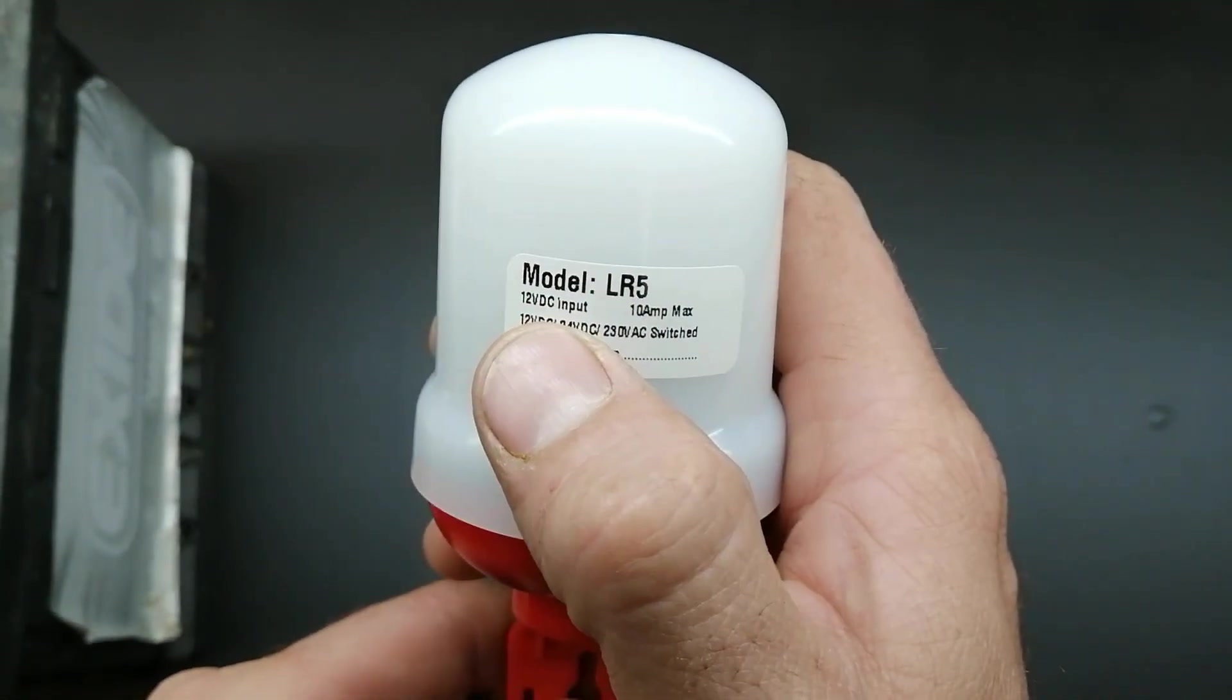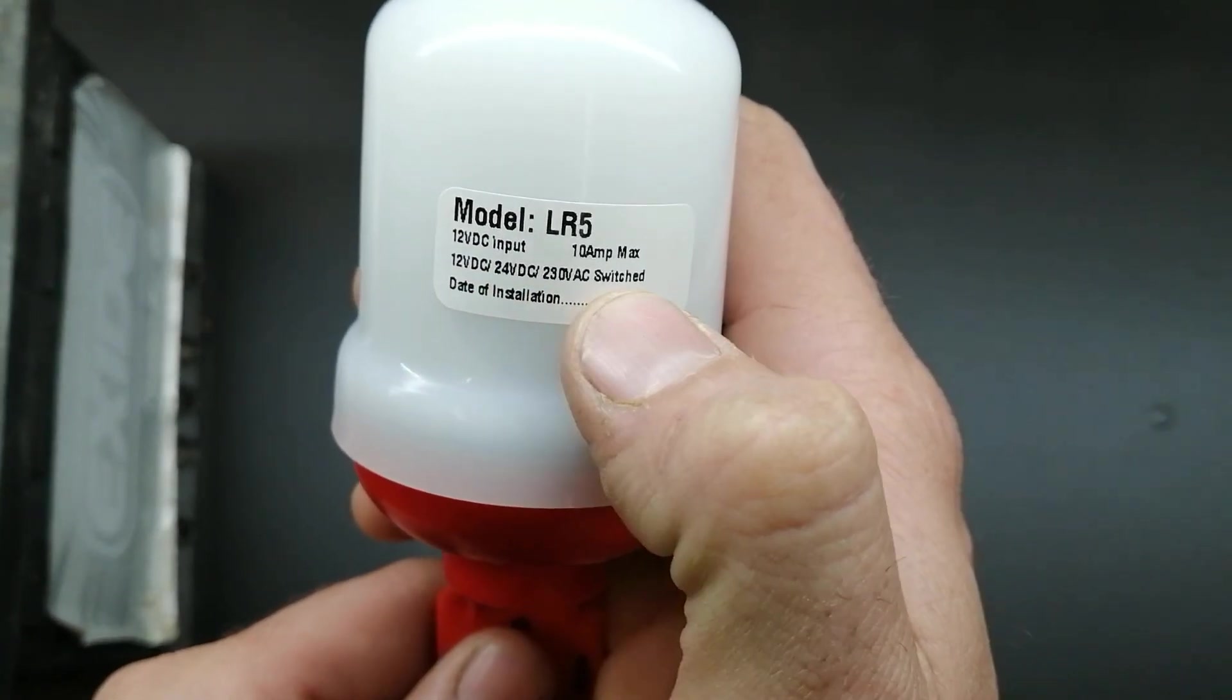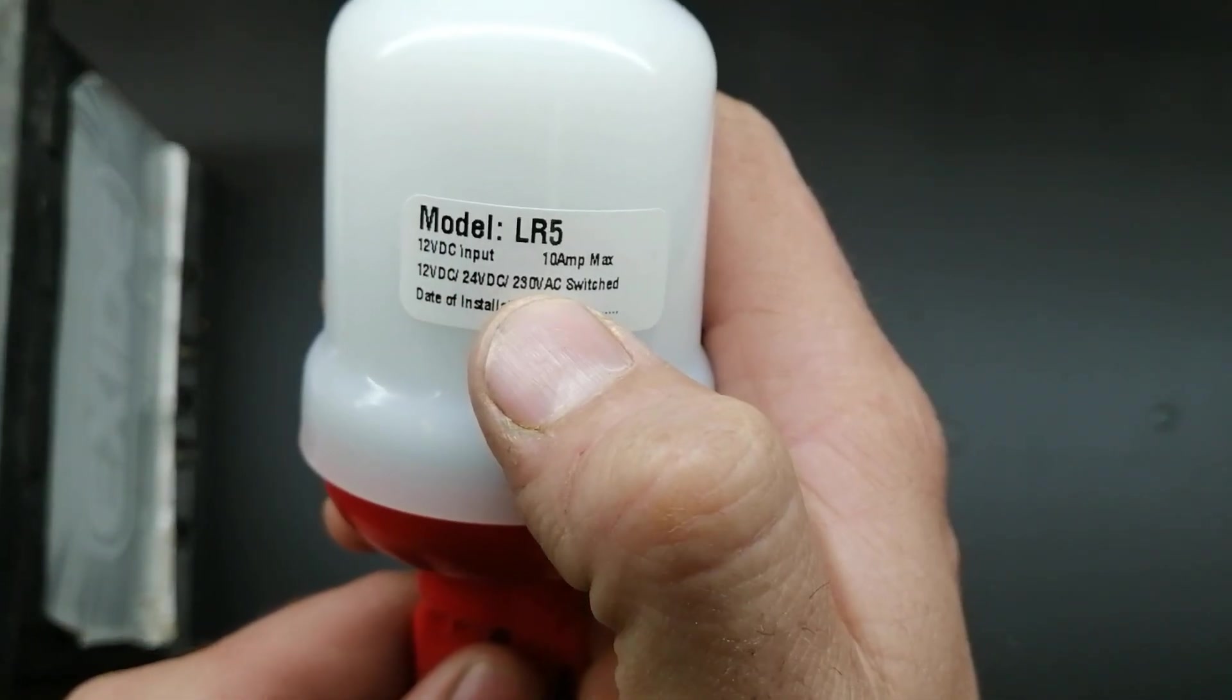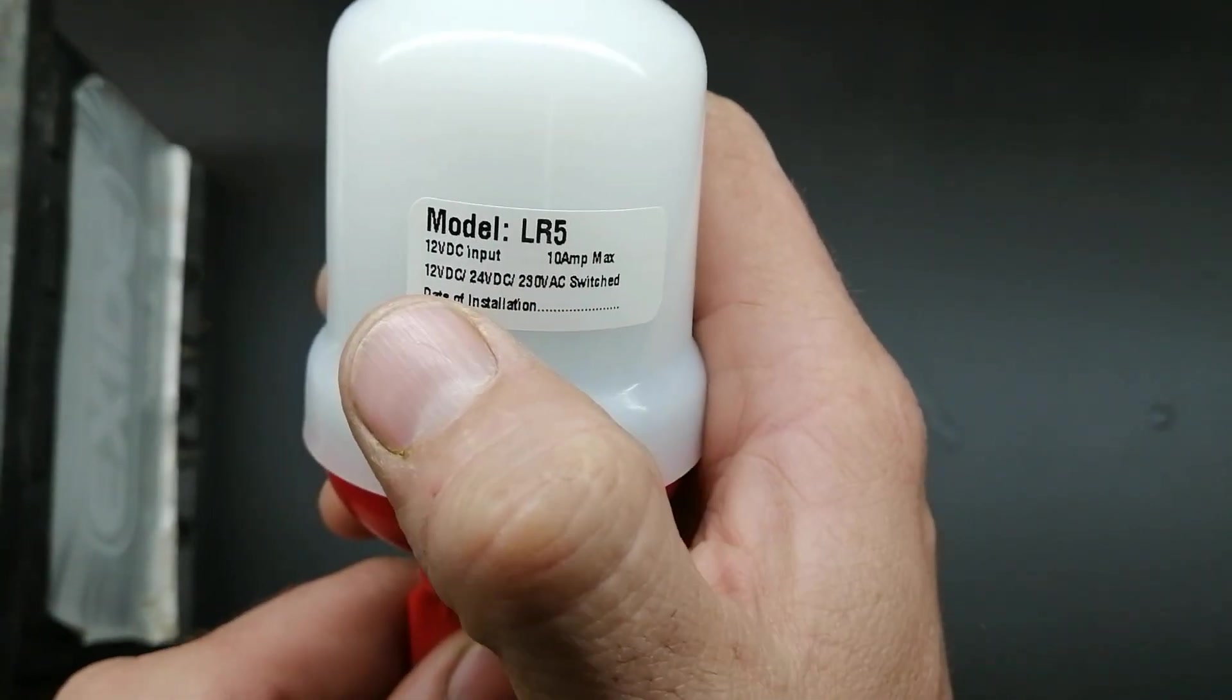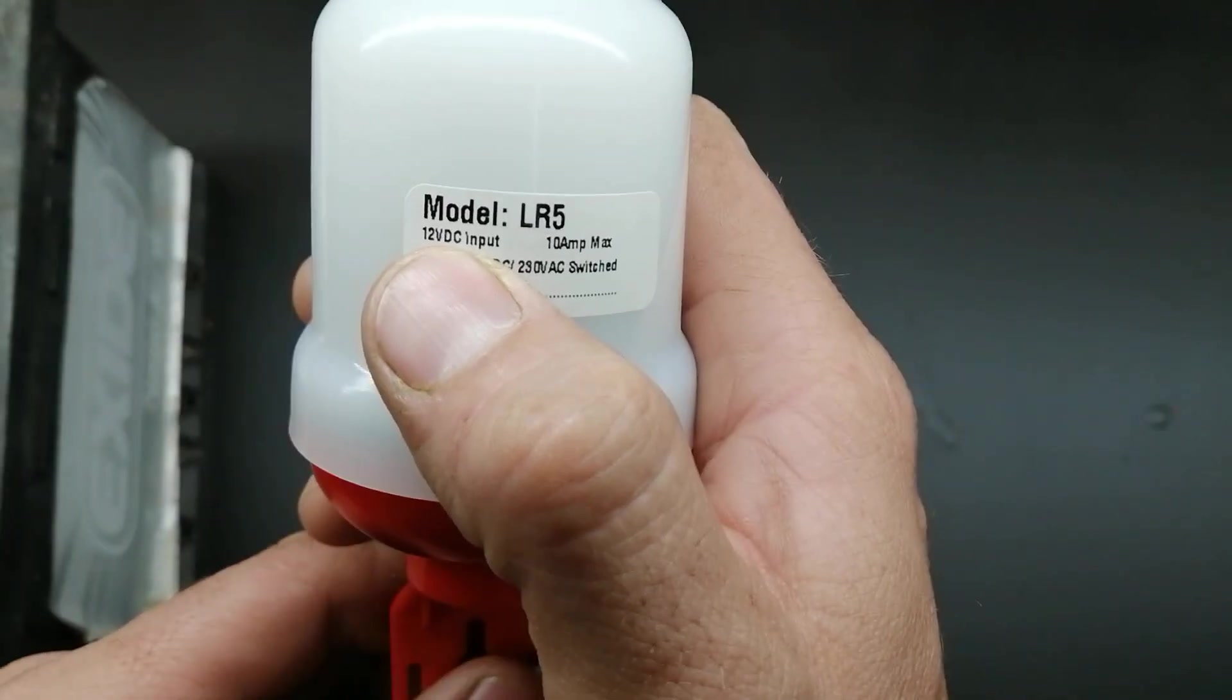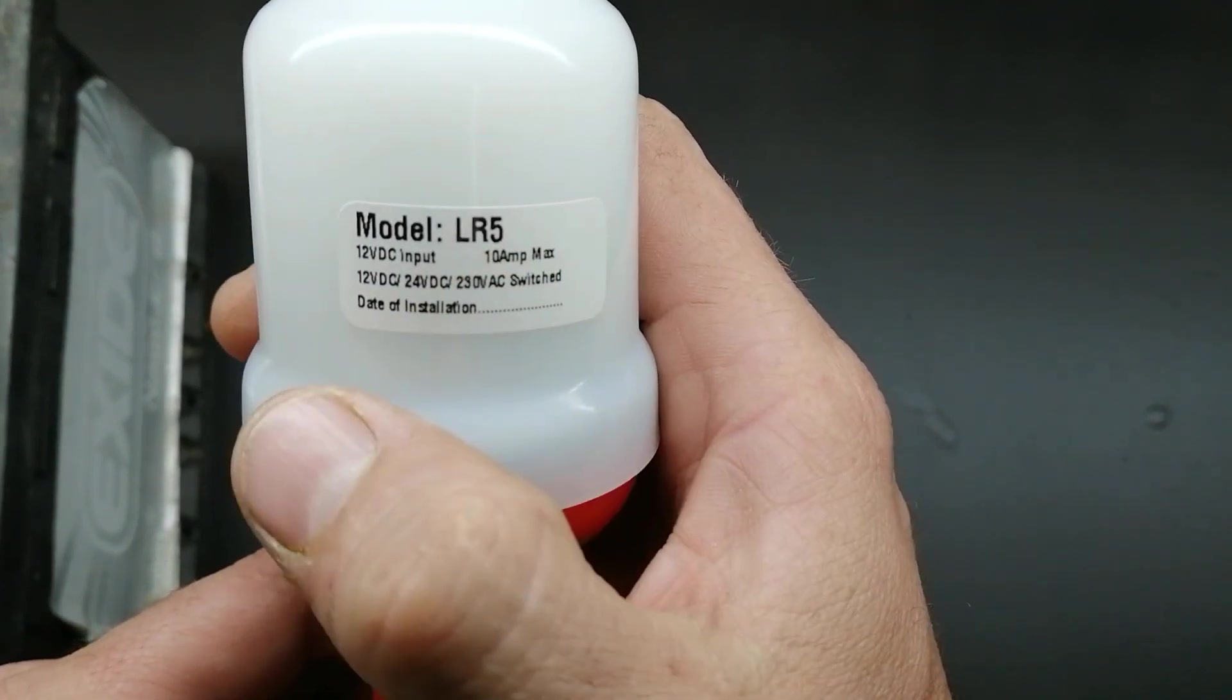It's 12V DC input and it's a 230V switch as well. So you can switch 12V, 24V or 230V. Not 400V but its operating voltage is 12V. So I'm not sure why you would need 12V DC operating voltage and then switch to 230V but I'm going to show you that as well.